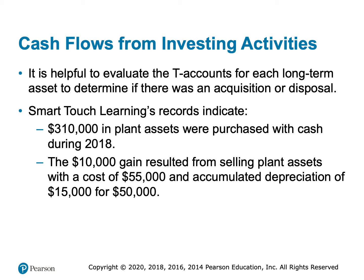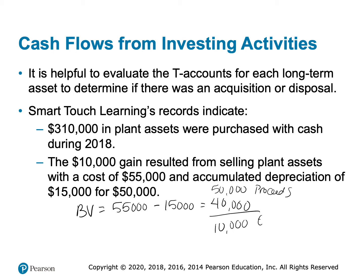We're told that we purchased $310,000 of plant assets with cash. That $10,000 gain resulted because we sold some plant assets for $50,000 in proceeds. Those assets had a cost of $55,000 and accumulated depreciation of $15,000, giving a book value of $40,000. Since we sold them for $50,000, that's where the $10,000 gain reported on the income statement comes from.